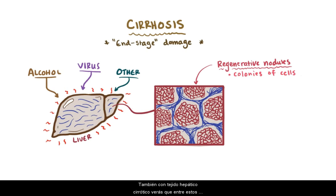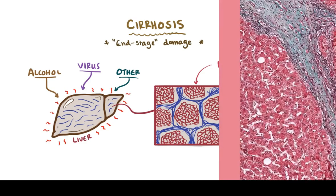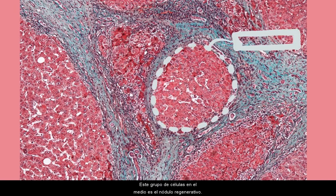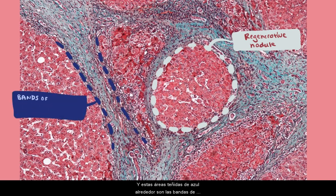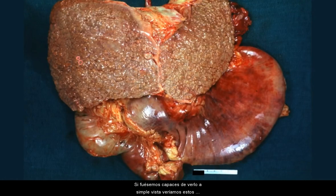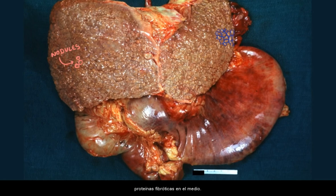With cirrhotic liver tissue, you'll see that in between these clumps of cells or nodules is fibrotic tissue and collagen. Here's a classic histology image of cirrhotic tissue. This clump of cells in the middle is the regenerative nodule, and these blue stains surrounding it are the bands of protein from the process of fibrosis. If we zoom out and look at it with the naked eye, we'll again see these nodules with fibrotic protein bands in between.